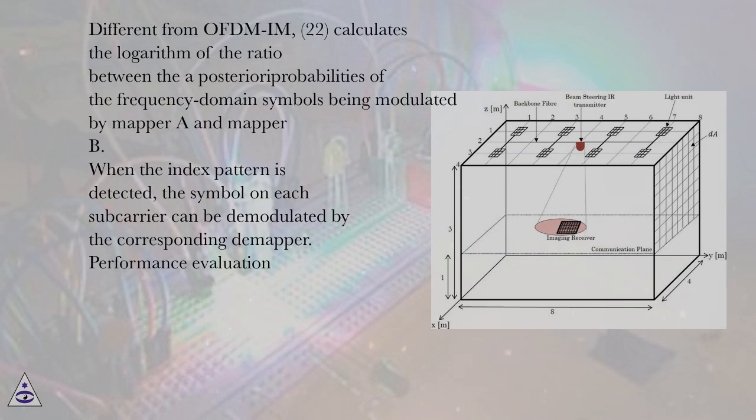Different from OFDM-IM, the equation calculates the logarithm of the ratio between the posterior probabilities of the frequency domain symbols being modulated by mapper A and mapper B. When the index pattern is detected, the symbol on each subcarrier can be demodulated by the corresponding demapper.